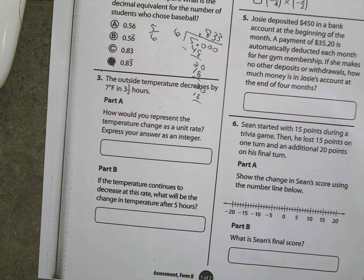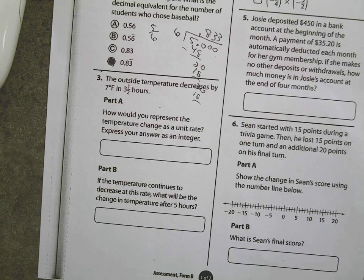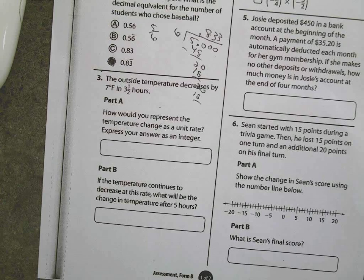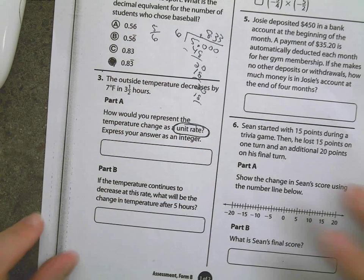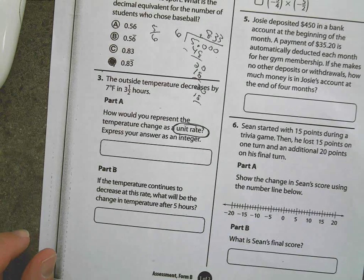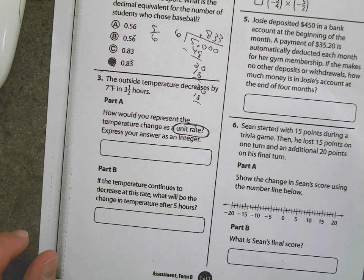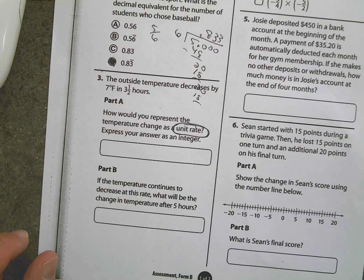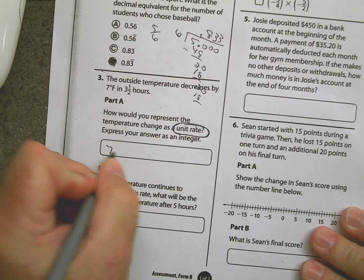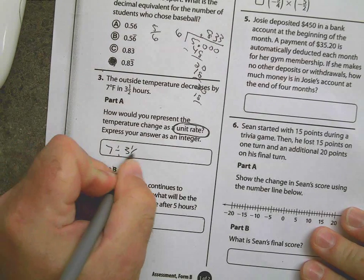The outside temperature decreases by seven degrees Fahrenheit in three and a half hours. How would you represent the change of the unit rate? Unit rate means divide it down to one hour, one minute, one whatever.